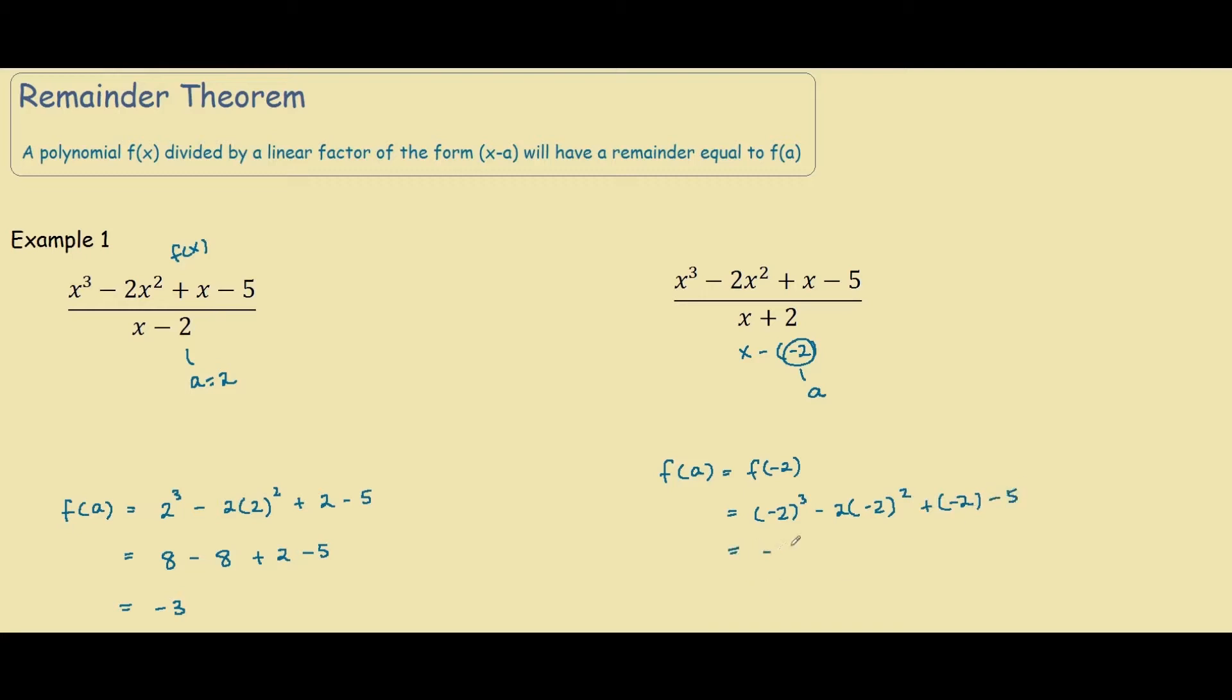So this would be negative 8. This would be minus 2 times 4 which is also negative 8 minus 2 minus 5. And if you work this out it will be negative 23, which will be the remainder of this problem over here.